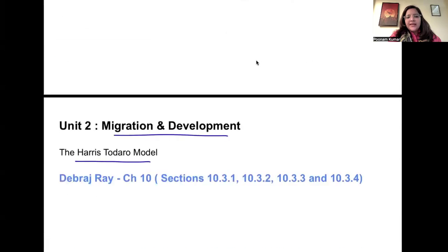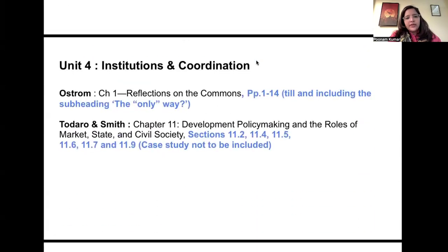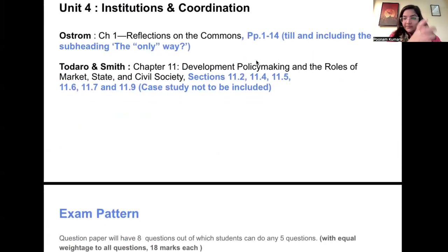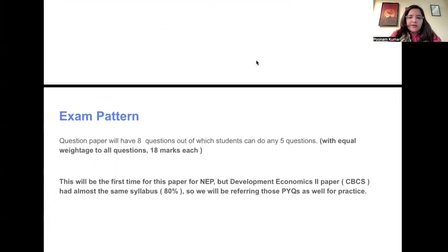So Debraj Ray chapter 9, 10, 12, 13, 14. Five chapters. And two readings on Ostrom and Todaro. So in total 7 readings. So we will try to wrap things up in a fast manner. This time we won't... The semester is also small. So we will keep that in mind.